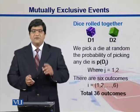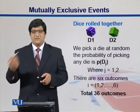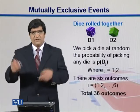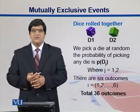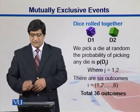For example, we can have 1 from one die and 6 from another, and in this way we can have 6 into 6 — 36 different combinations.